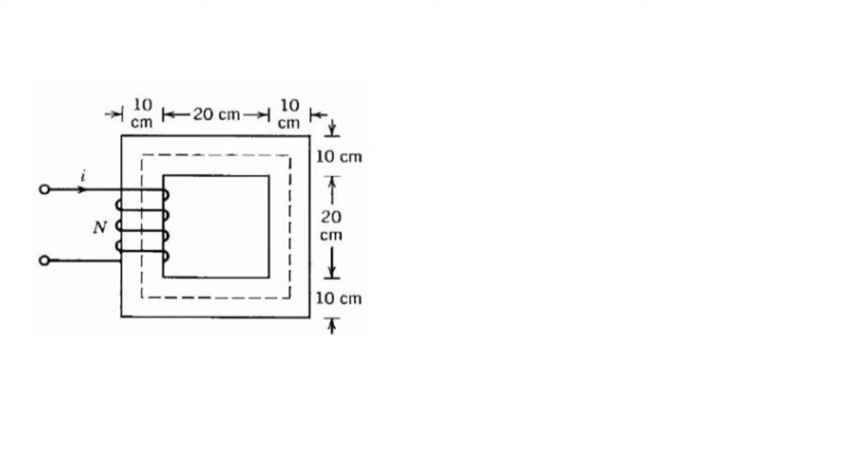When the core dimensions or the core width is same, like here you can see it's 10 centimeter, this one is also 10 centimeter, this one is also 10 centimeter, 10 centimeter, then the calculation is very easy. The mean length - this is the outer boundary of the core, and this is the inner boundary of the core. In between, the dotted line shows the mean path.